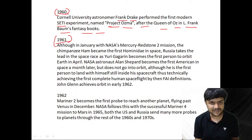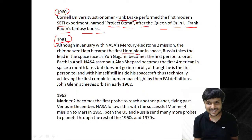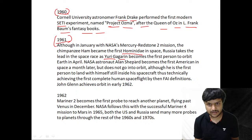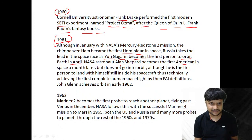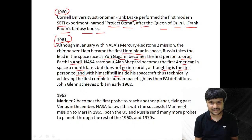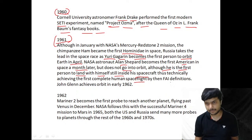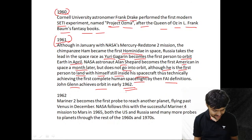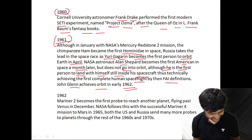In January 1961, with NASA's Mercury-Redstone 2 mission, the chimpanzee Ham became the first hominid in space. Russia then took the lead in the space race as Yuri Gagarin became the first person to orbit Earth in April. NASA astronaut Alan Shepard became the first American in space a month later but did not go into orbit. John Glenn achieved orbit in 1962.